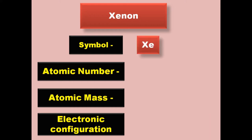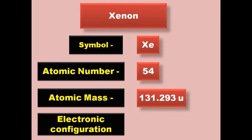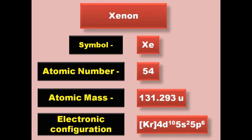Xenon has symbol Xe, atomic number 54, atomic mass 131.293, electronic configuration [Kr] 4d10 5s2 5p6. Xenon is a noble gas and exists in gaseous form at room temperature.